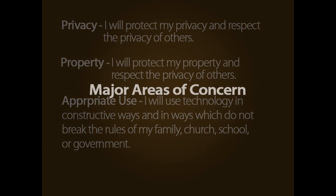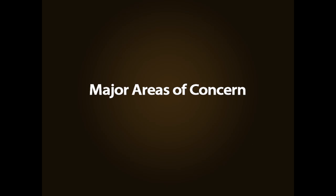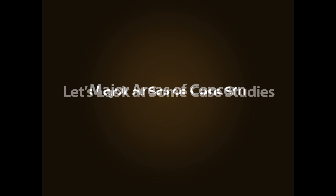Major areas of concern: the scope of information technology ethics is very broad. For the purposes of this short guide, we will be looking only at some common cases where younger children will need to make ethical choices, or have the unethical actions of others affect them. The issues are categorized under the major headings of privacy, property, and appropriate use. These cases and others like them should be used to foster classroom discussion.